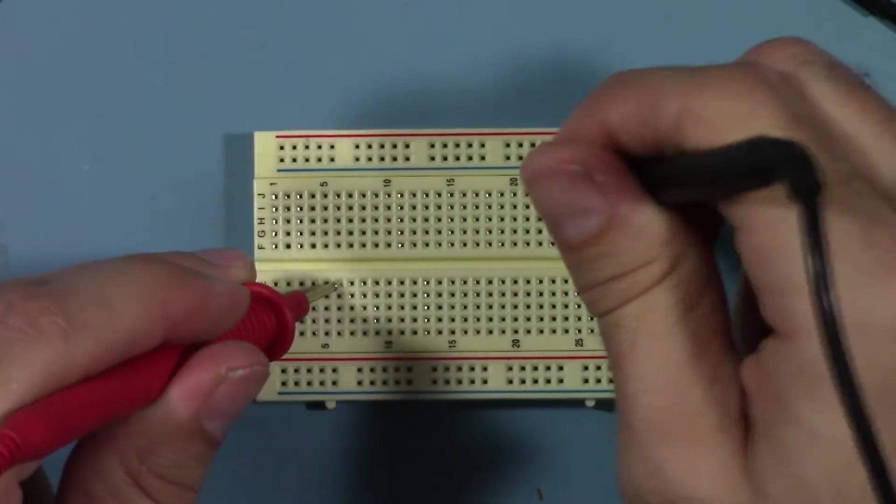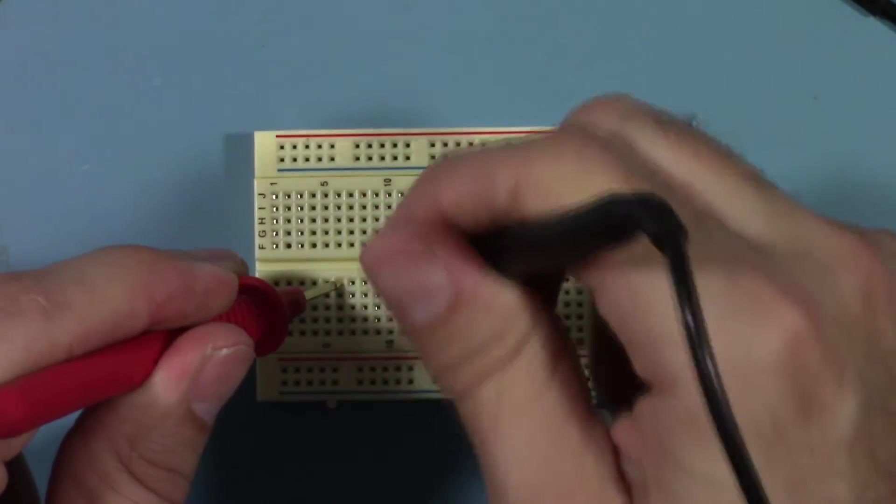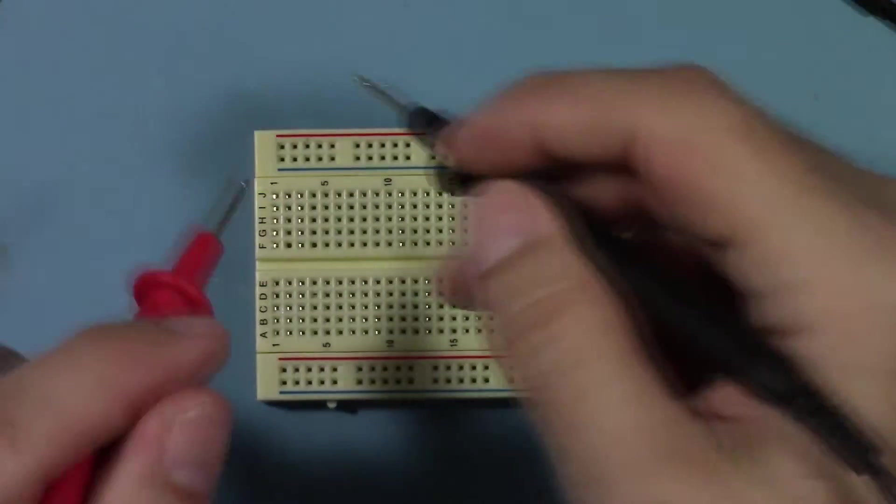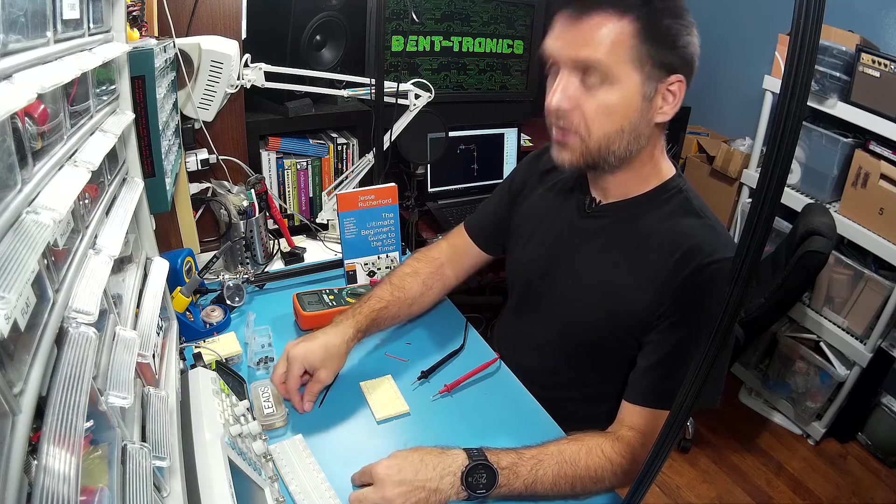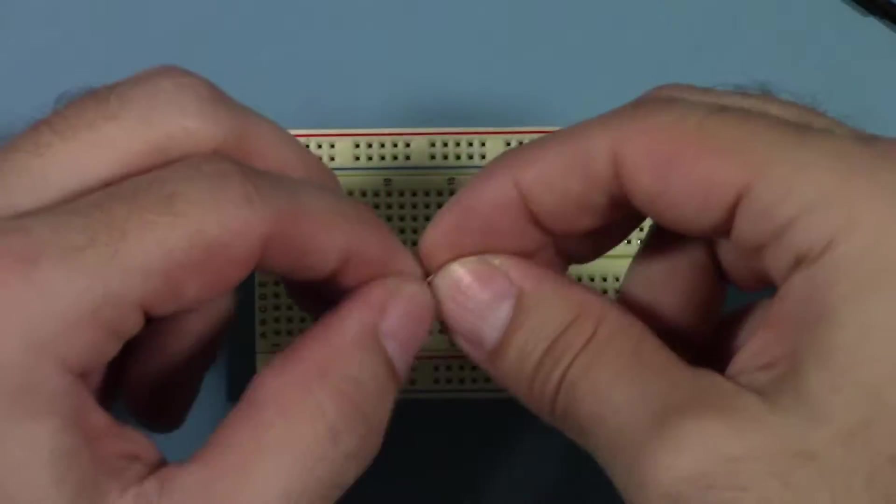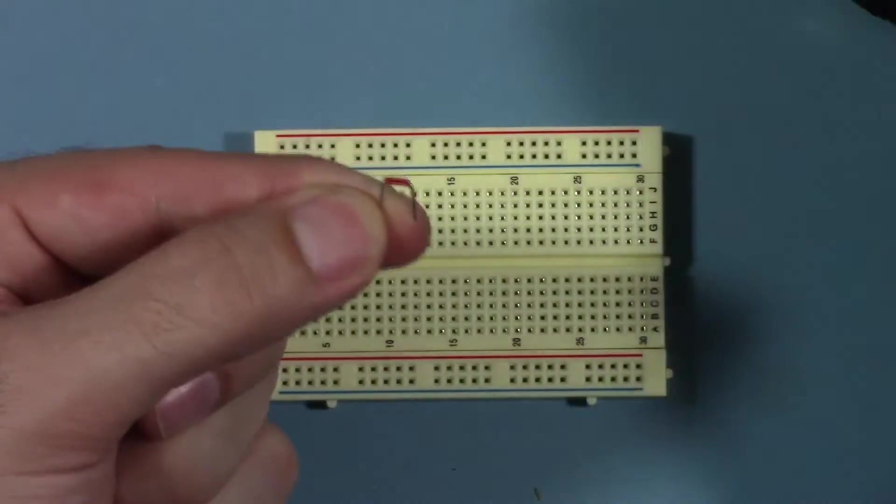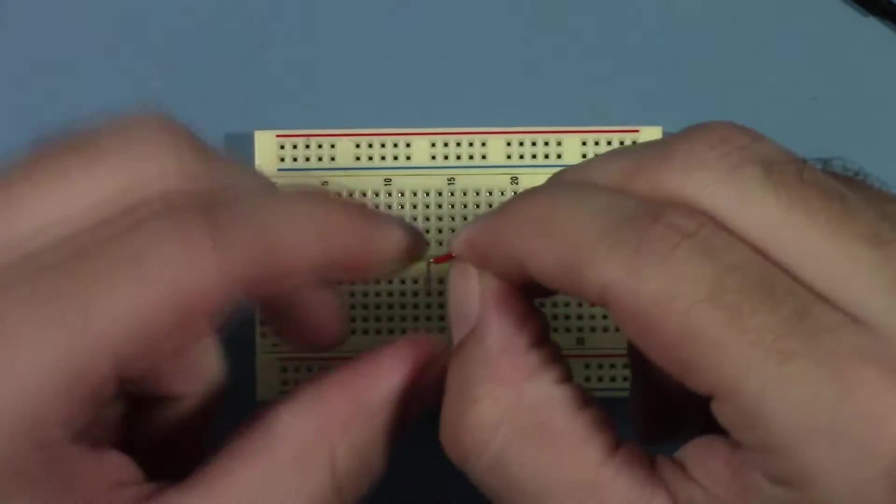Now then, as you can see though, we can't really get into these holes. So how are we going to test which ones are connected together? Well, there's a couple different ways. First, what we can do is we can take just a little piece of wire like that. We can straighten that out.